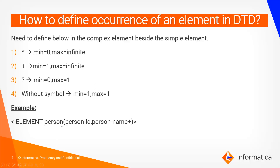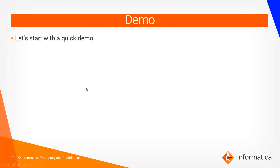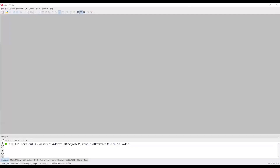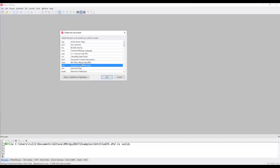After the compound element declaration you can provide these occurrence symbols. For example, 'person-name+' means person-name must appear at least once and can appear any number of times. A question mark means it's optional but can appear at most one time. Now let's start with a quick demo.